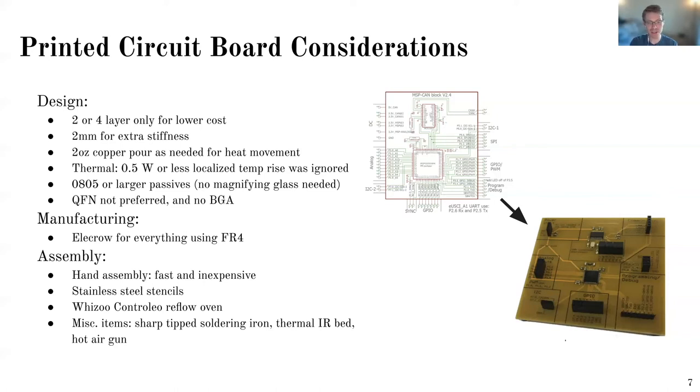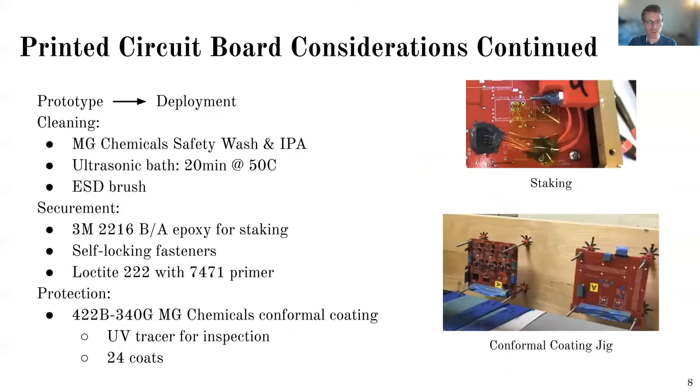And then of course, there are some miscellaneous items like a sharp soldering iron. A thermal IR bed is helpful for the boards that have big components on like the two ounce copper pours, just to help heat everything up. And then of course, a hot air gun. But we really didn't need that much for resources to turn these boards out.